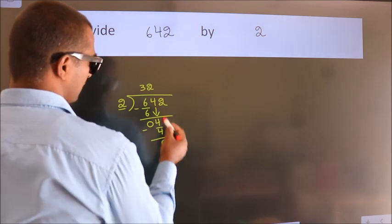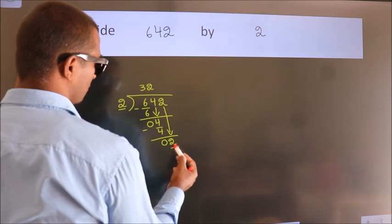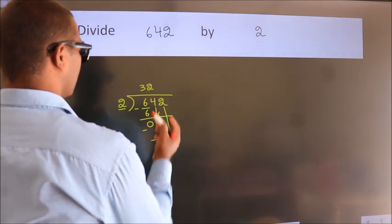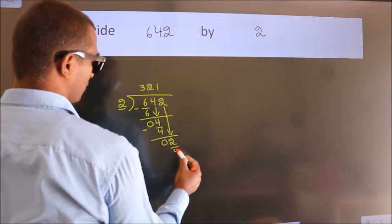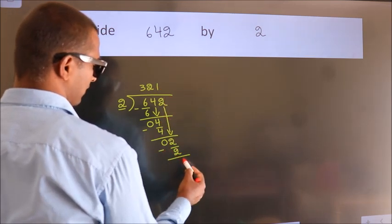After this, bring down the beside number. So 2 down. So 2. When do we get 2? In 2 table, 2 ones, 2. Now we subtract. We get 0.